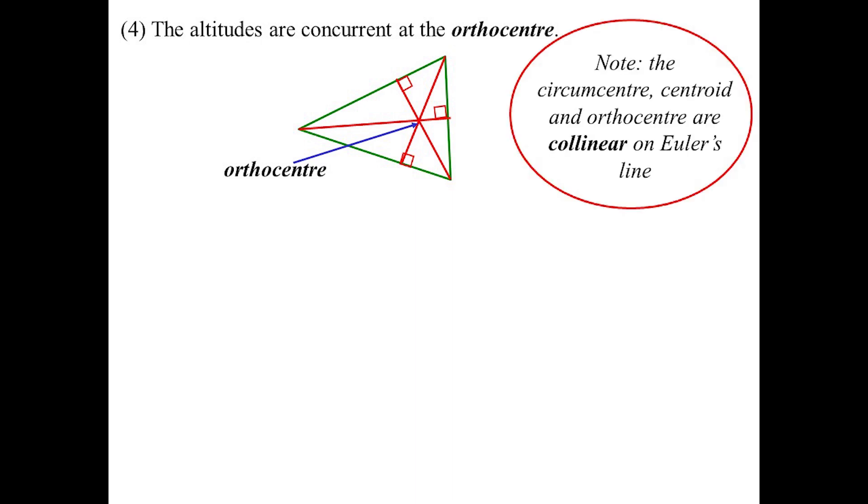The altitudes or the perpendicular heights also meet at the same point known as the orthocenter. All those centers - the circumcenter, the centroid, and the orthocenter - are collinear, so they will lie on the same line known as Euler's line.